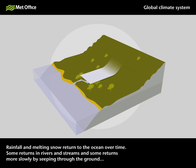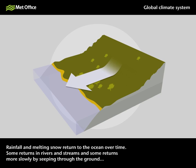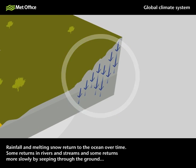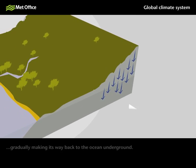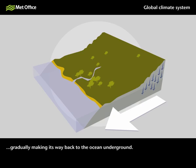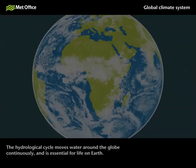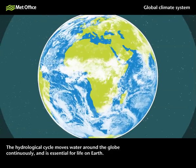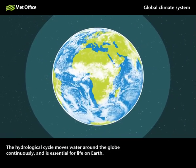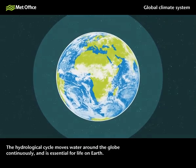Rainfall and melting snow return to the ocean over time. Some returns in rivers and streams, and some returns more slowly by seeping through the ground, gradually making its way back to the ocean underground. The hydrological cycle moves water around the globe continuously and is essential for life on Earth.